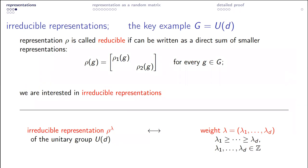A reducible representation is one which can be decomposed as a direct sum of smaller components. Concretely, this means it is possible to select a coordinate system in your vector space so that all matrices associated to elements of your group can simultaneously be block-diagonalized. I don't like such reducible representations — I like irreducible ones. The irreducible representations play the role of prime numbers in number theory: they are the fundamental blocks from which any representation is constructed.